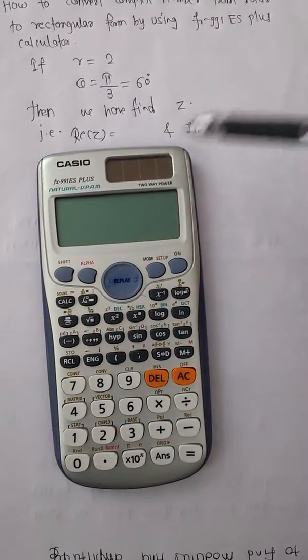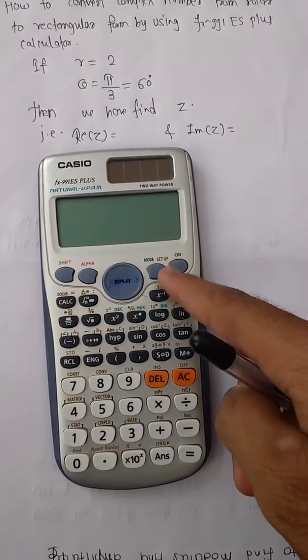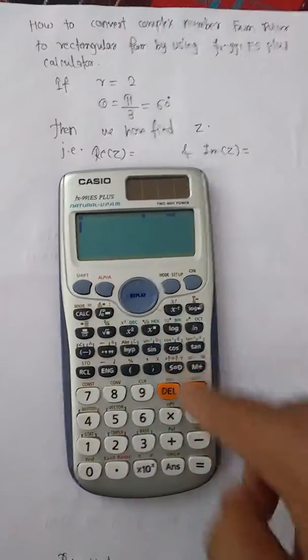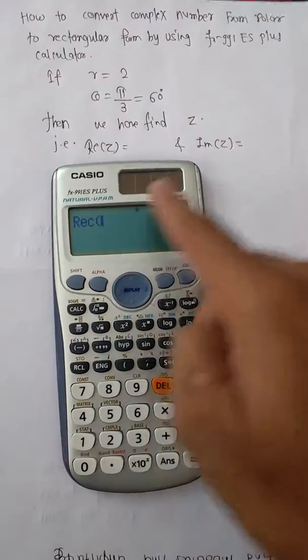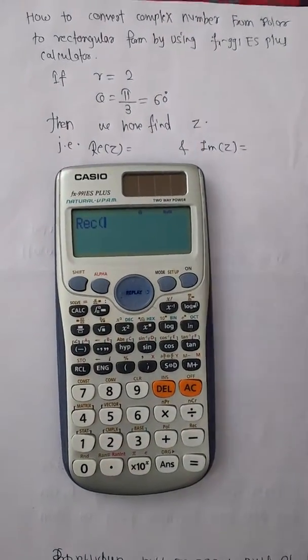By using FX-991ES Plus calculator, first turn on your calculator, then press shift and minus button to generate REC, that is rectangular.